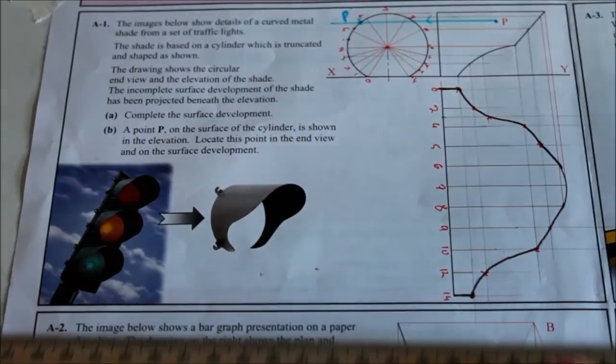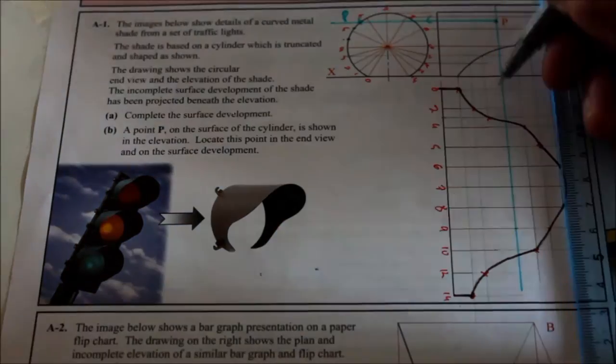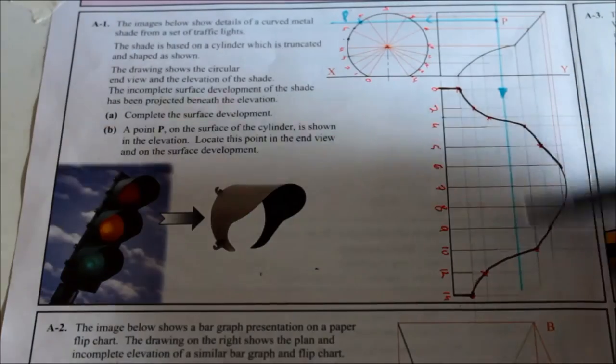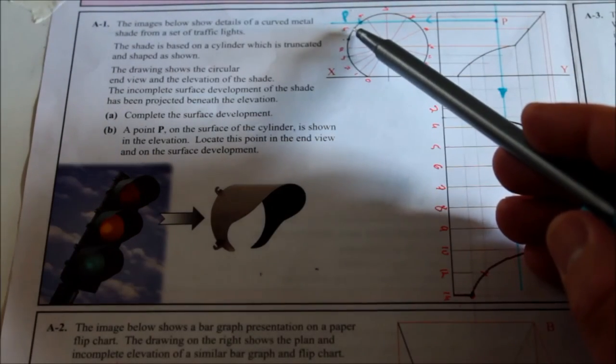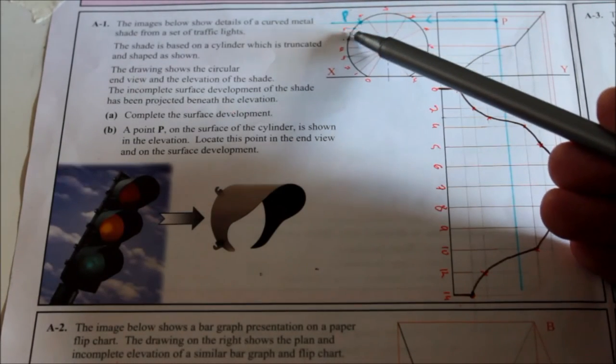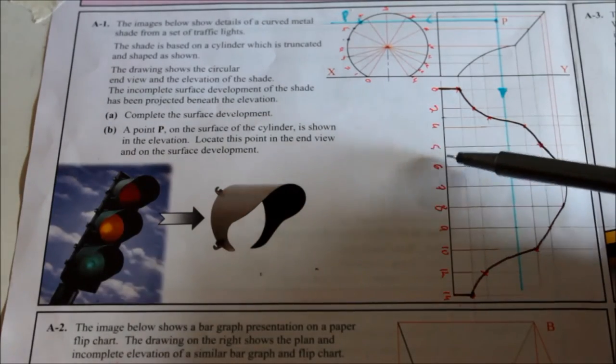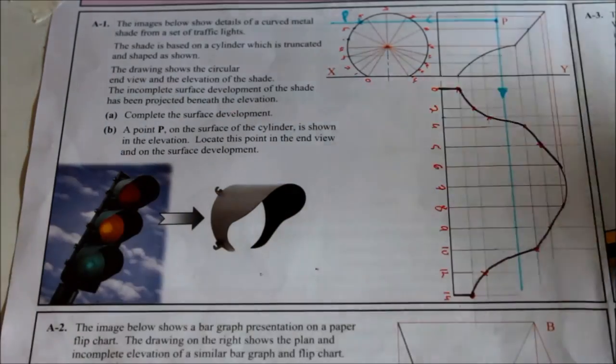How do I find it in the plan or on the surface development? It's going to be directly below this once we bring it straight down. In the end view, it's between points five and six. So if I get the distance from five to six there, or distance from five to P on the outline, mark them between five to six, it will give me point P on the surface development.